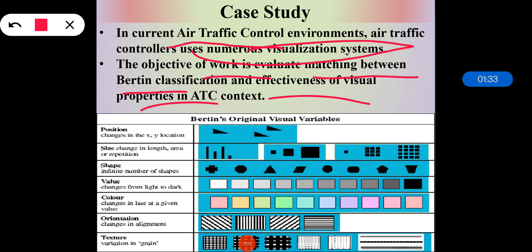Bertin introduced seven visual variables: position, size, shape, orientation, color, and texture. Subsequently, Cleveland and McLean built scales of expressivity and effectiveness for Bertin's visual variables, because these are dependent on human perceptual capabilities.